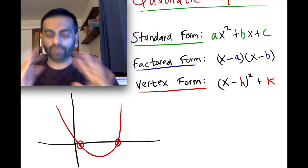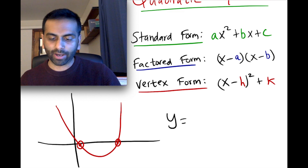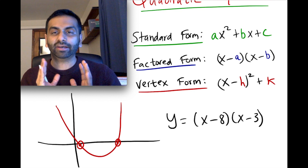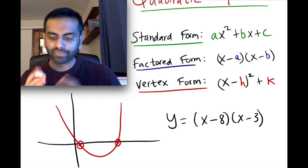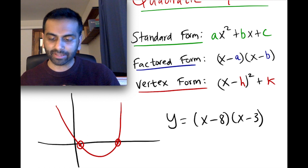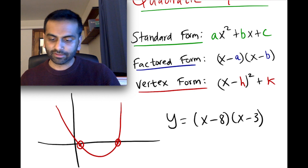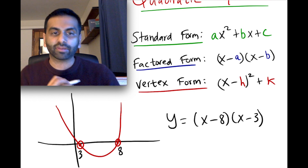Suppose you have y equals x minus 8 times x minus 3. If I just said, what do you know about the graph of this? You can tell what the x-intercepts will be because it's in factored form. The thing subtracted from each x gives you the intercept. So x minus 8 means 8 is one of your x-intercepts, and 3 is your other x-intercept.